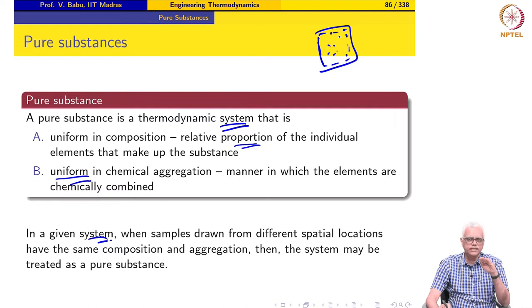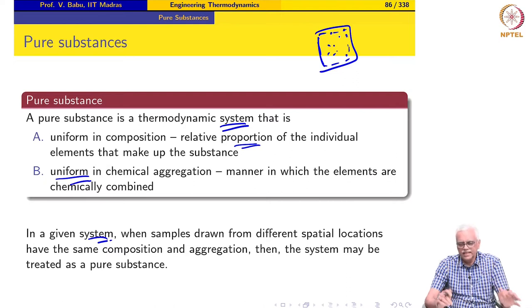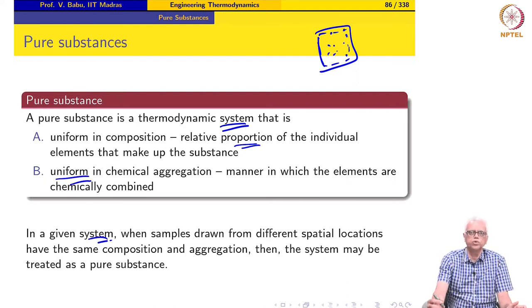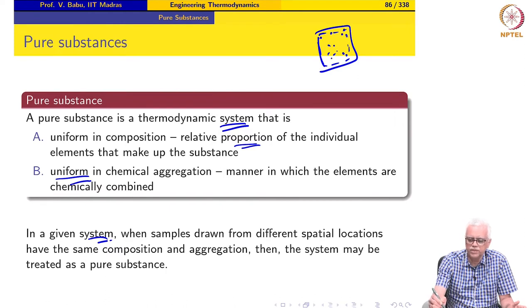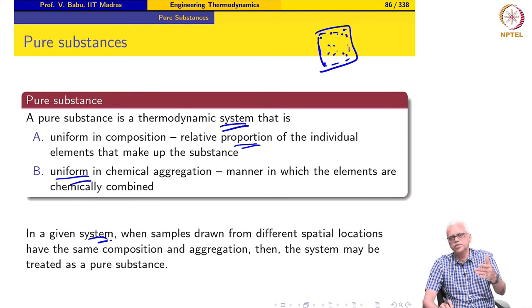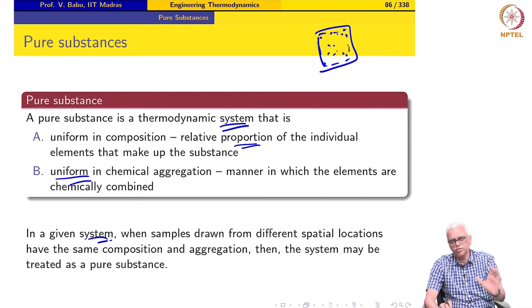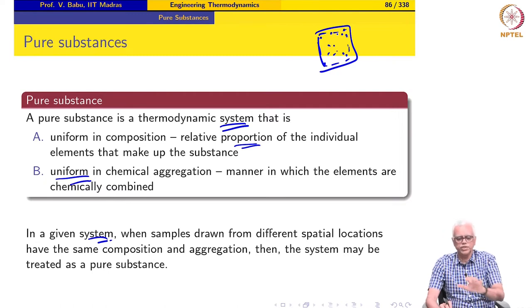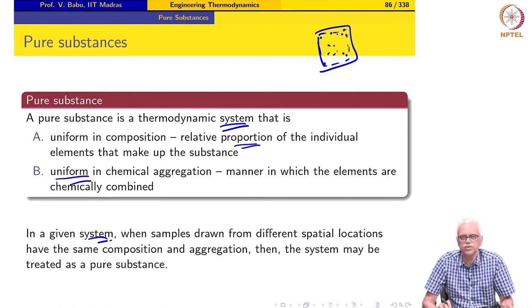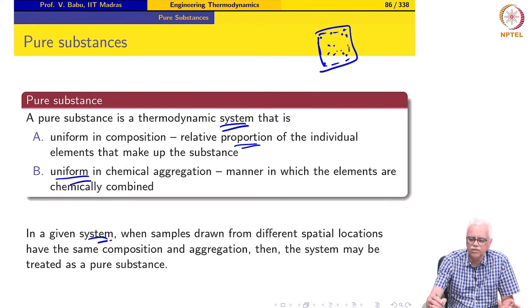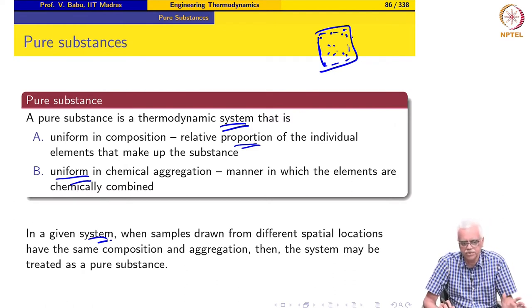You may recall that we said something very similar when we talked about the macroscopic approach. We said that for the macroscopic approach to be valid, when I measure pressure, temperature, or any other property at different points in the system, it should be the same irrespective of where I measure. Now, in the definition of a pure substance, what we are saying is that composition and chemical aggregation must be the same irrespective of the spatial location in the system. Once that is satisfied, we can define whatever is inside as a pure substance.